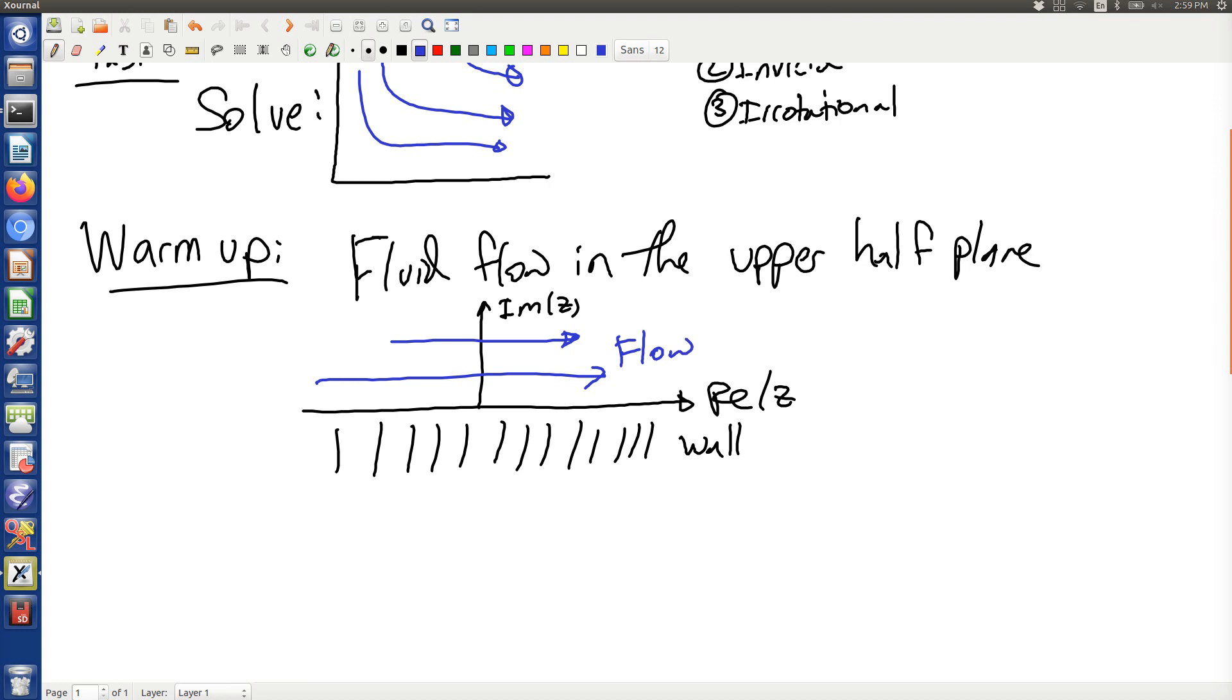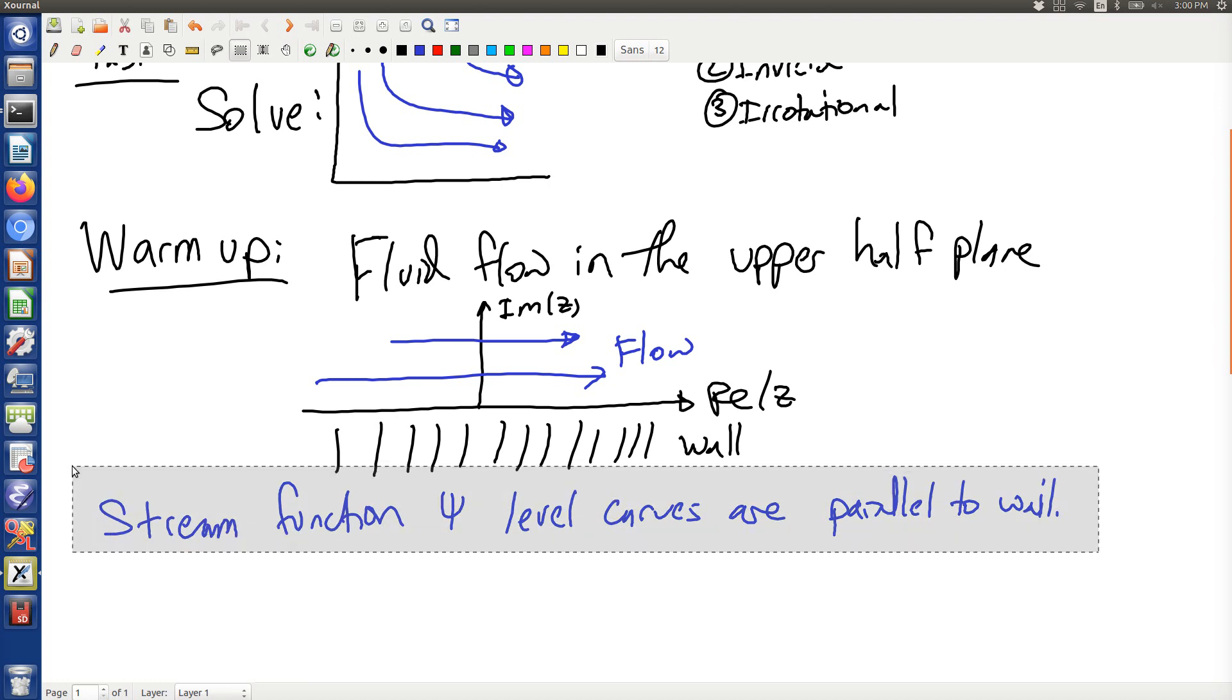Now in order to do this, you look at this fluid flow and say, well, I'm looking for a function in which I have the stream function whose level curves are parallel to the wall. That's what we're after. We're after the stream function whose level curves are parallel to the wall.